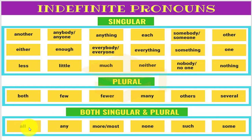Some indefinite pronouns can be used as both singular and plural. For example, 'all': 'All is well that ends well' — treated as singular. But you can also say 'All were invited to the party' — treated as plural. So 'all' can function as either a singular or a plural pronoun depending on the context.